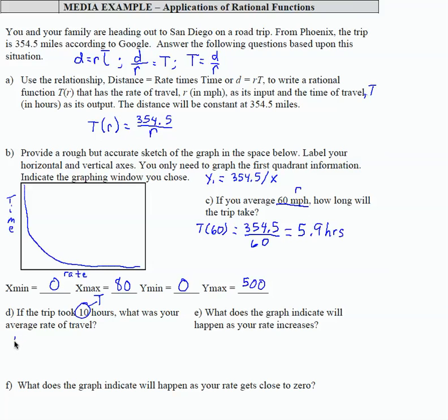So I'm going to replace t with 10, and then 354.5 over r. If I cross multiply here, I'm essentially multiplying both sides of an equation with 10 over 1 on this side by r. I get 10 r equals 354.5. And then r equals 354.5 divided by 10. So r is 35.45 miles per hour.